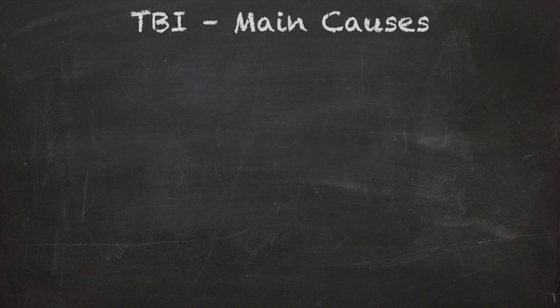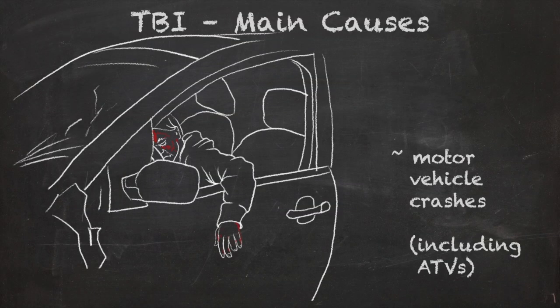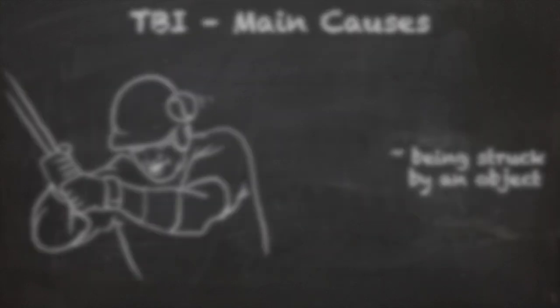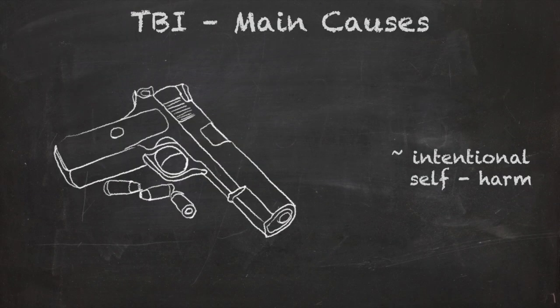The main causes of TBI are falls, motor vehicle crashes including ATVs, being struck by an object or struck against an object, and intentional self-harm such as suicide or suicide attempts with a firearm.